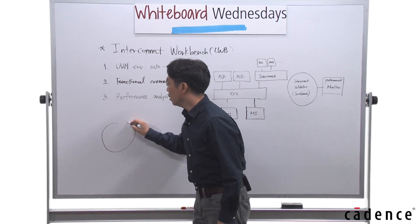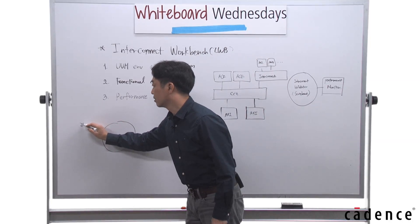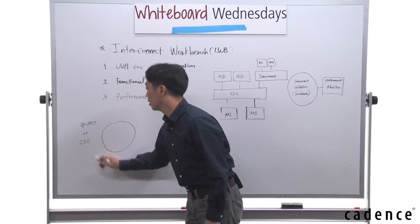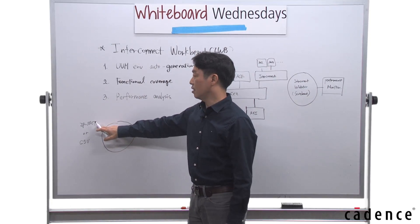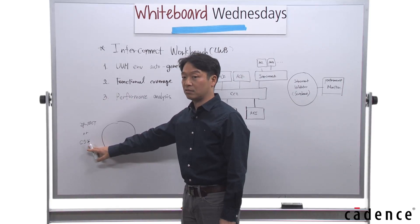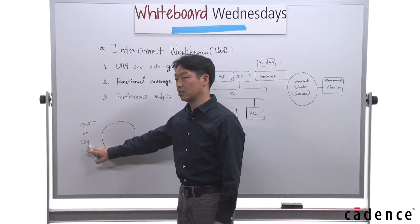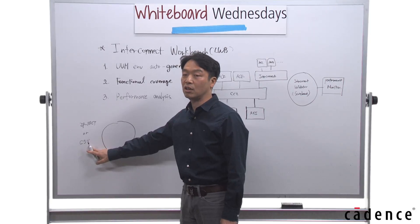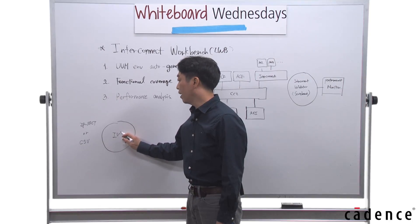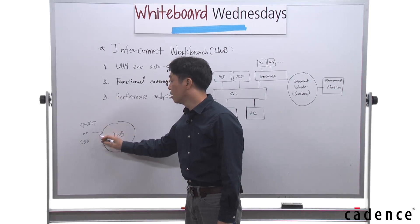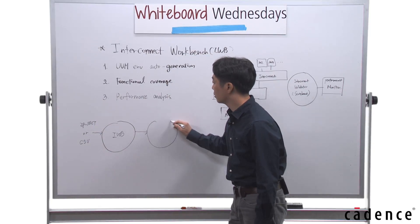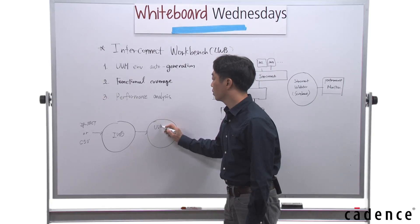The IWB input is the IP exec or the CSV format. The IP exec comes from AMBA Designer, and CSV is generated by Excel spreadsheet. The Excel spreadsheet includes the whole design specification about the DUT. The IWB takes these inputs and generates the UVM testbench.